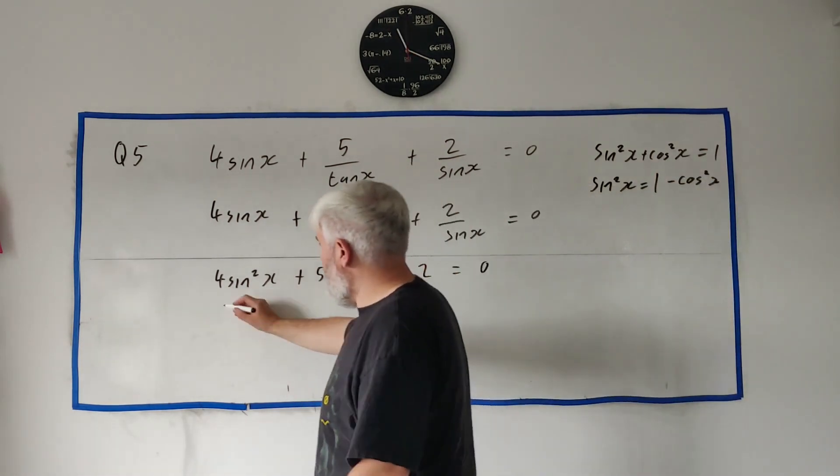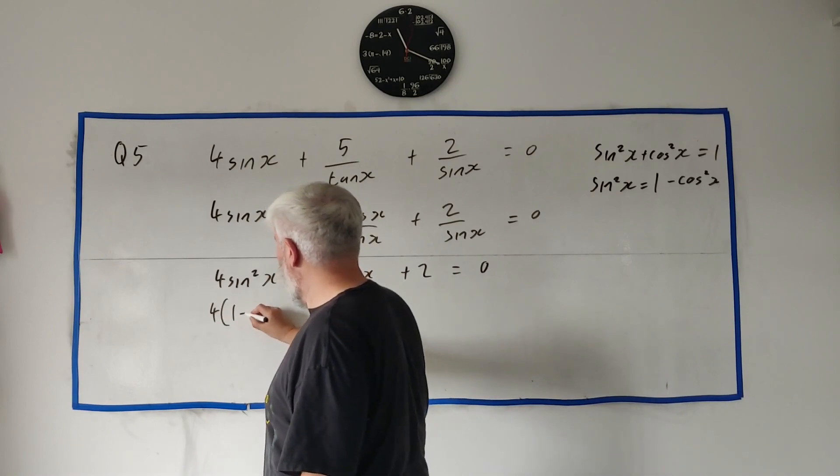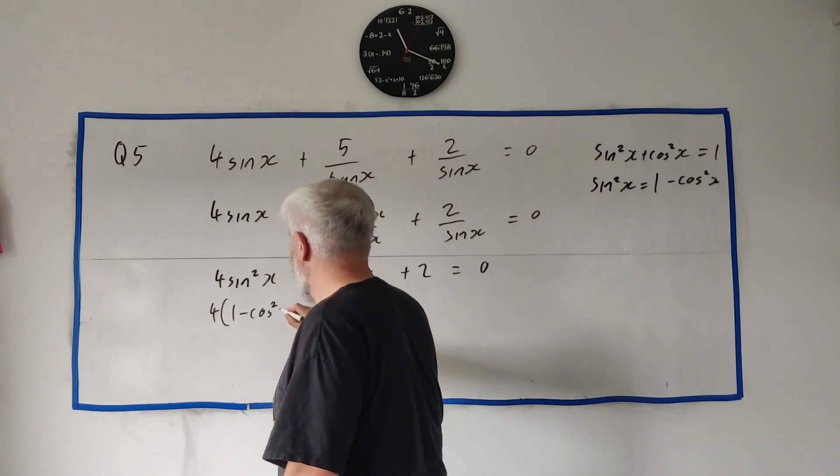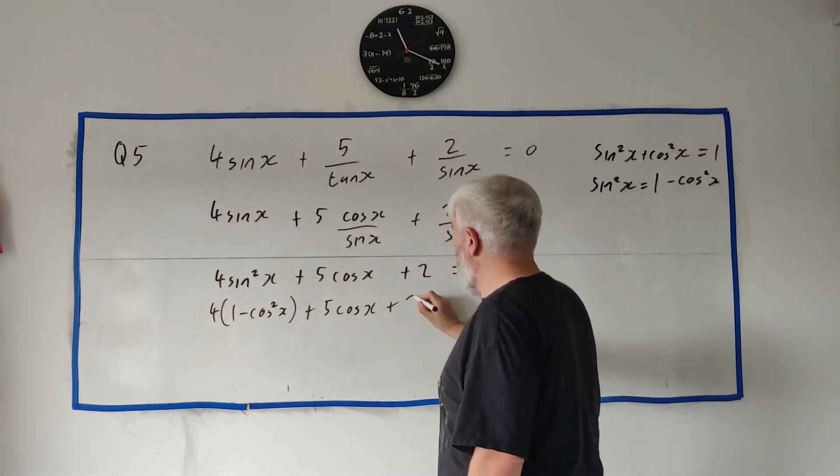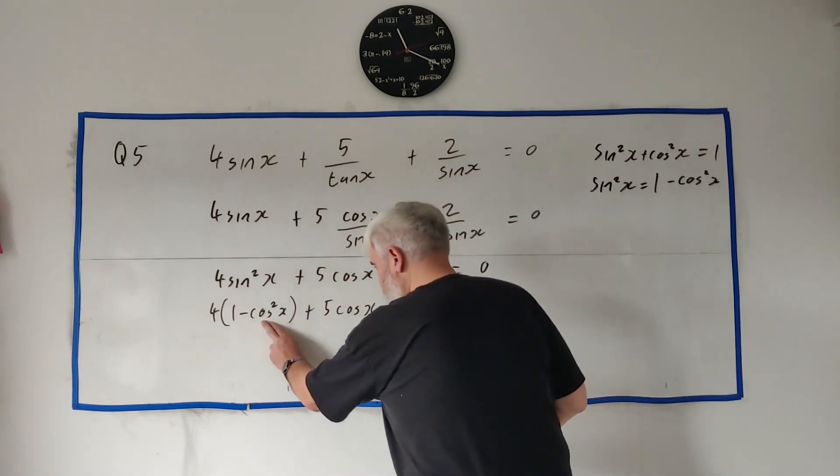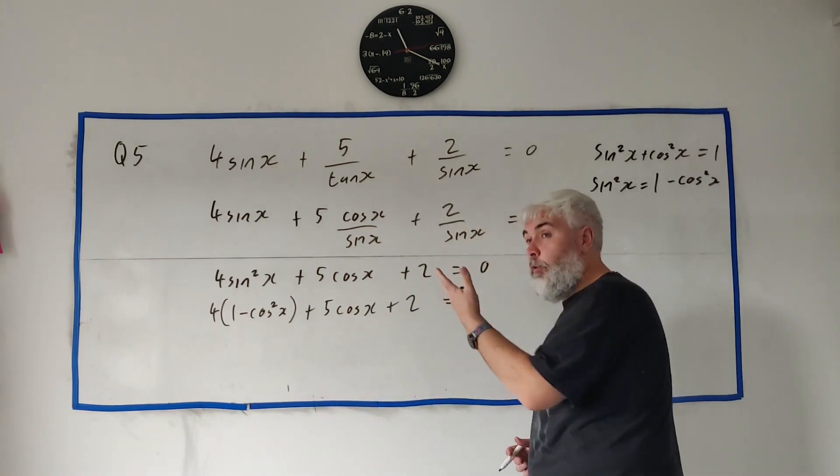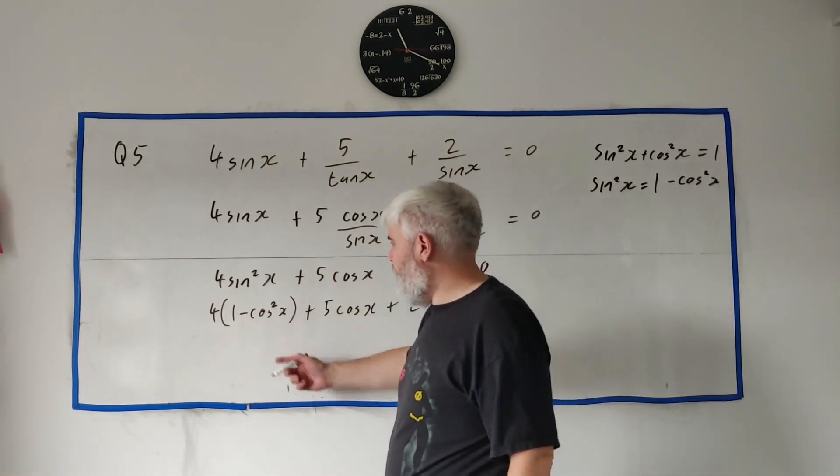So we can replace sine squared by one minus cosine squared x. And this is pretty much what they asked us for. We still have to clean it up a little. But basically they asked us for a cosine squared, a cosine, and a number.